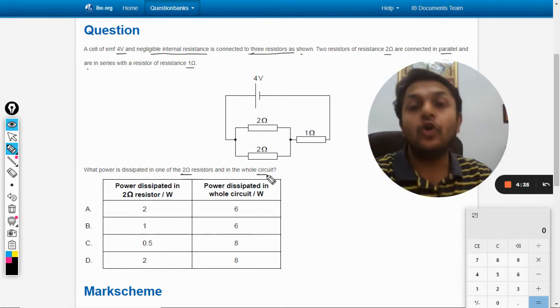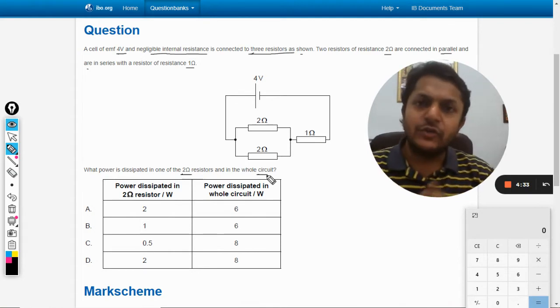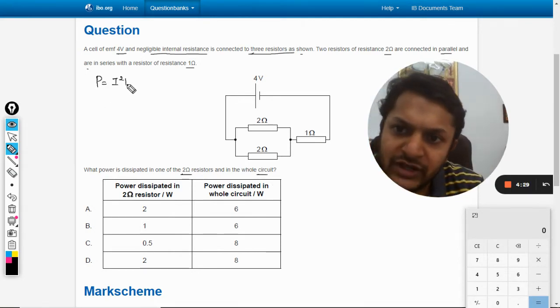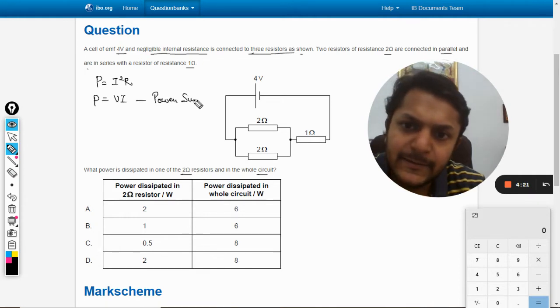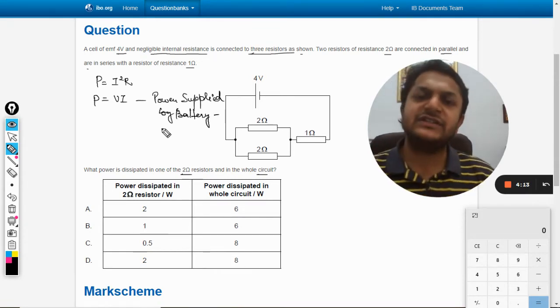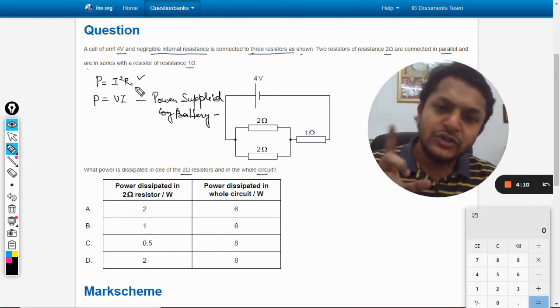Okay, so we know that the formula we use for power is P = I²R and the other formula is P = VI. This formula is used to find the power supplied by battery, but when we are concentrating on individual resistances, we would be using I²R.